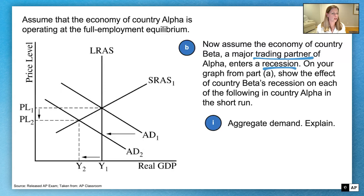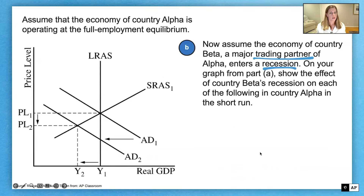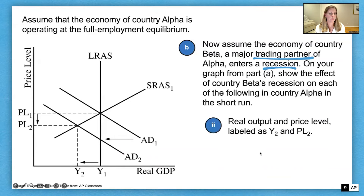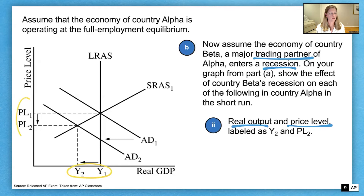We want to show aggregate demand shifting to the left, AD1 to AD2. For our explanation: aggregate demand in alpha decreases because the recession in beta decreases the demand for alpha's products, and alpha's exports to beta will fall. The second part of B is to show what happens to real output and price level, labeled as Y2 and PL2. Output falls from Y1 to Y2 on the x-axis and price level falls from PL1 to PL2 on the y-axis.